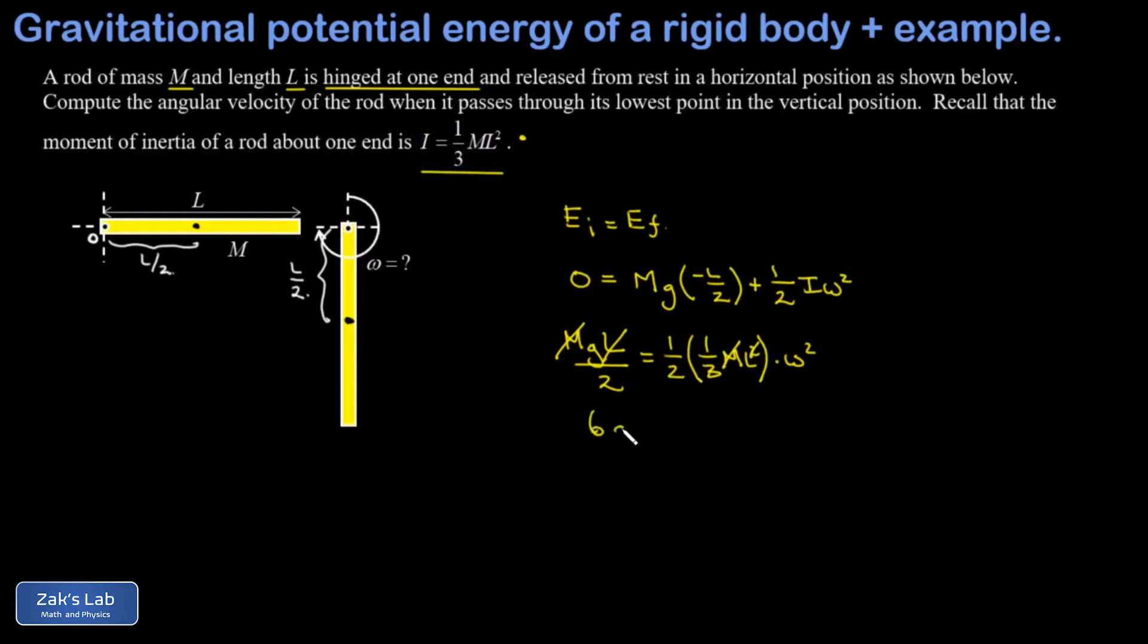I'm going to multiply both sides by 6 and I get a 6g over here, and I'm going to divide by L on both sides so 2L in the denominator. And again that's all equal to omega squared. So we solve for omega.